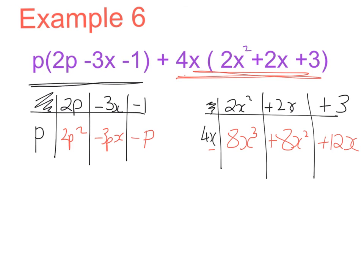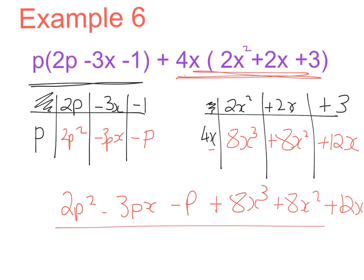So my answer for all of this is 2p squared minus 3px minus p plus 8x cubed plus 8x squared plus 12x. So super long one there, but we're just using all of the work that we've done beforehand and just putting the two sets together. Now if there was anything here I could group, at this point I would also tidy it up a little bit, but as you can see here every single thing is a different term.